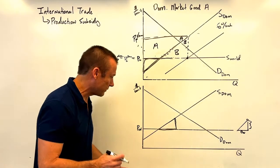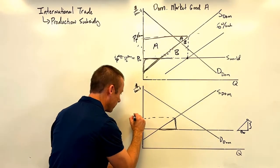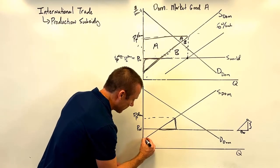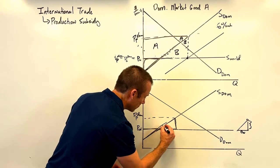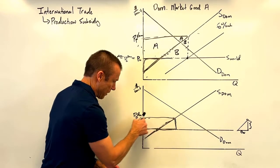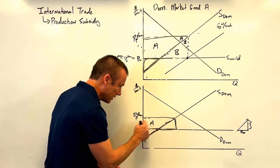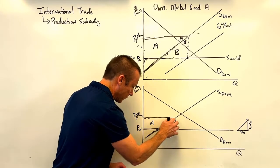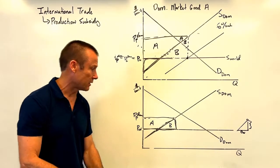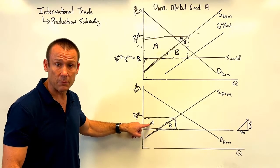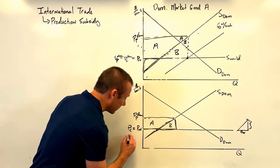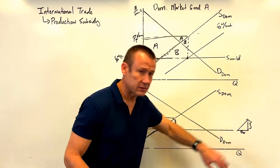With the wedge placed, we label price producer domestic. There's no risk of double counting because we never shifted a curve. The domestic producer surplus increases from the original triangle to the new larger triangle — they pick up area A. The government outlay is the per unit subsidy multiplied by the quantity produced domestically, giving rectangle A plus B. Consumers face no change — their price remains at price world. The loss to domestic social surplus is B.